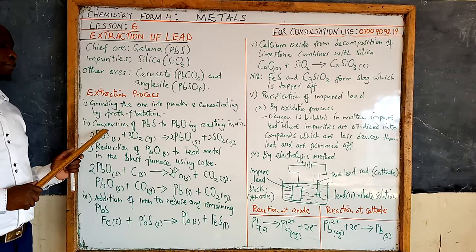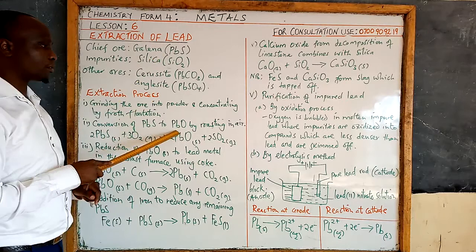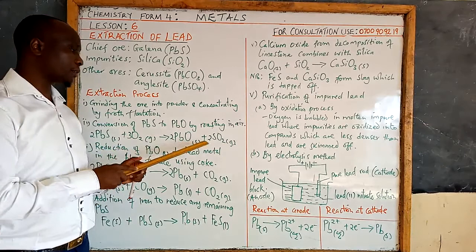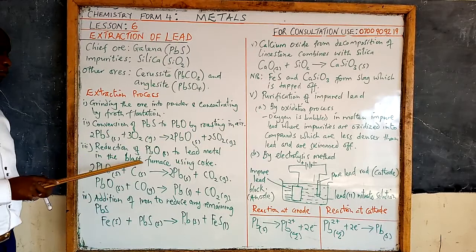Step two involves conversion of lead sulphide into lead oxide, and this is done by roasting it in air. So lead sulphide reacts with oxygen to form lead oxide and sulphur dioxide gas.